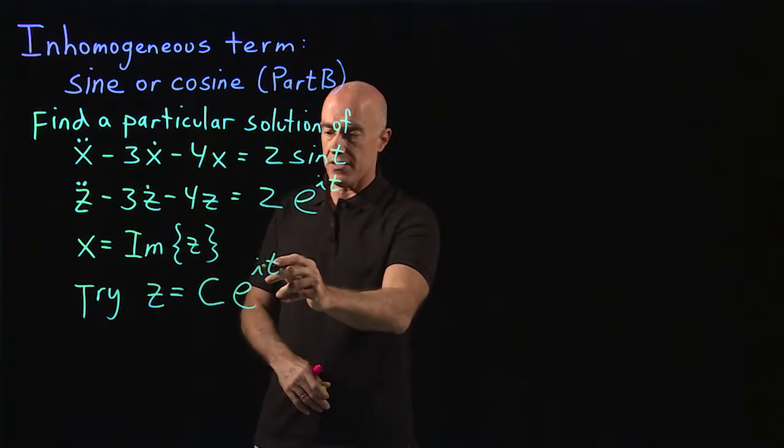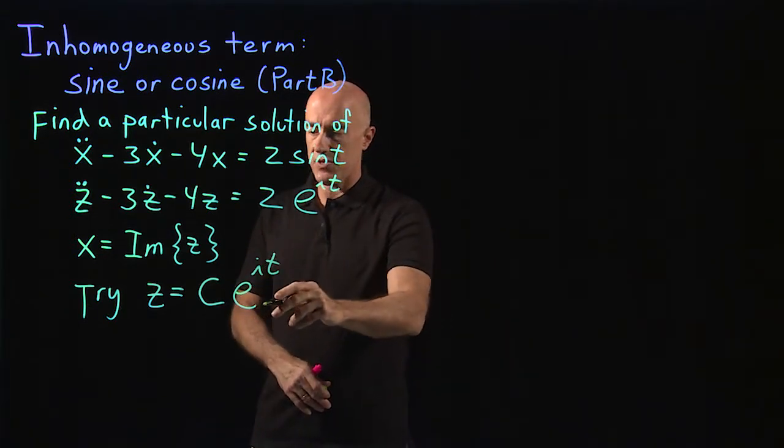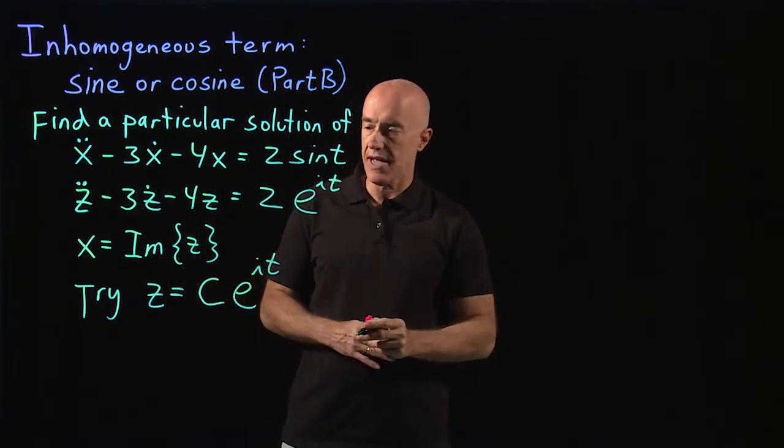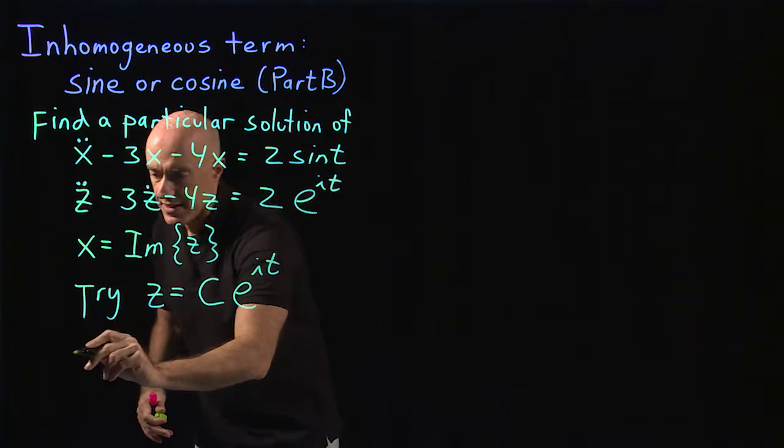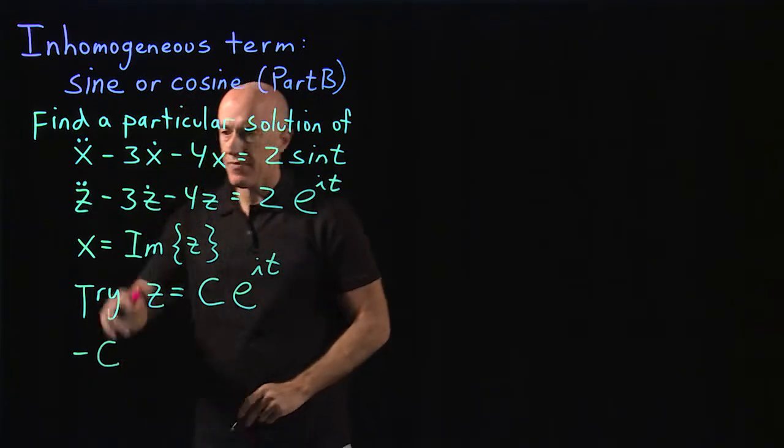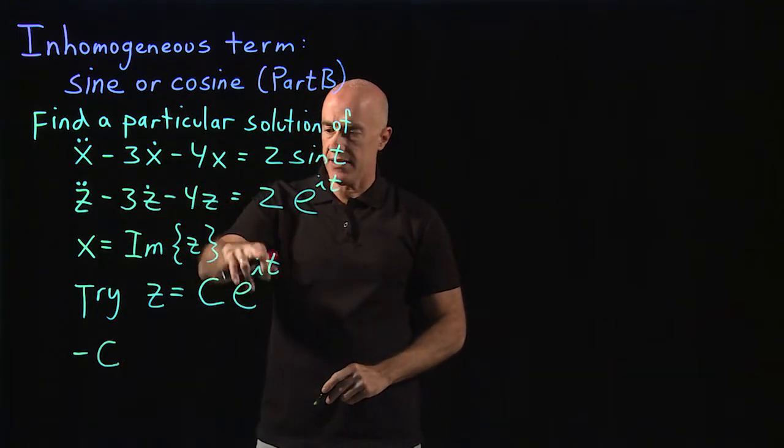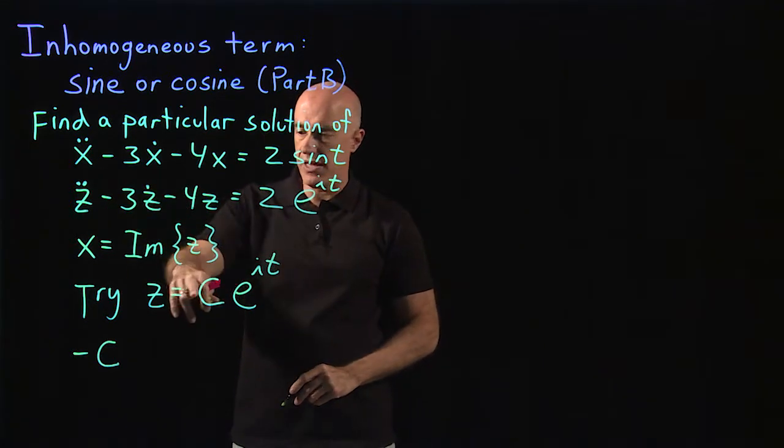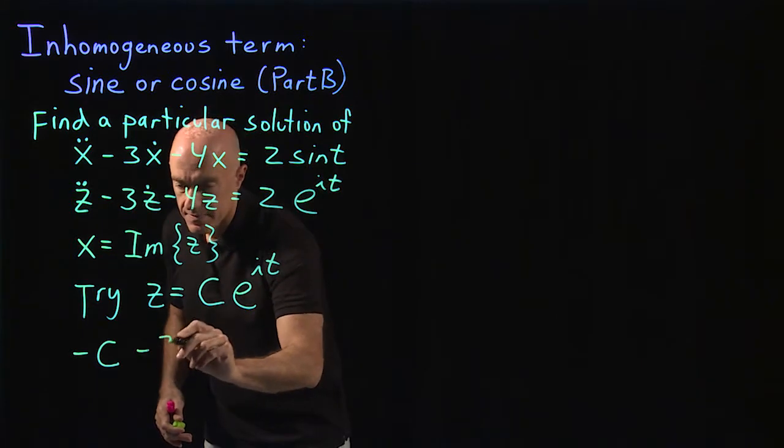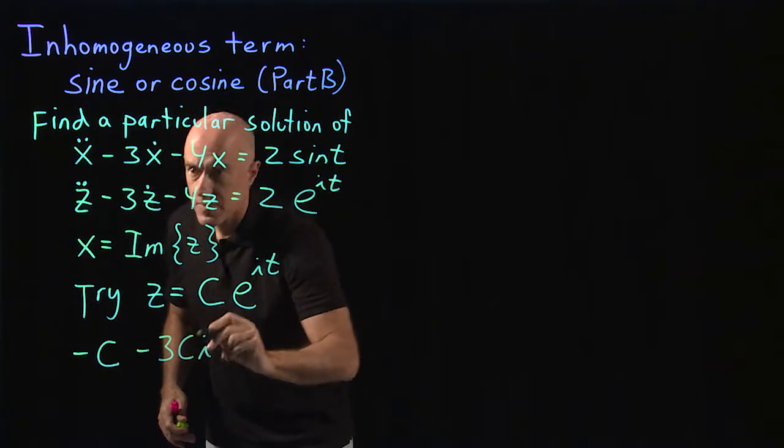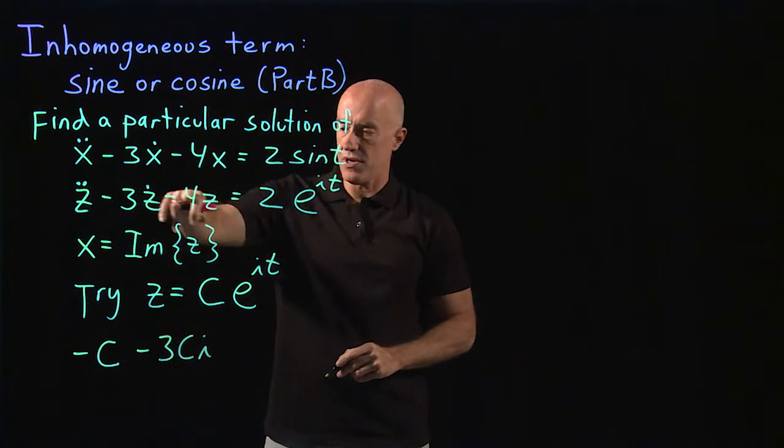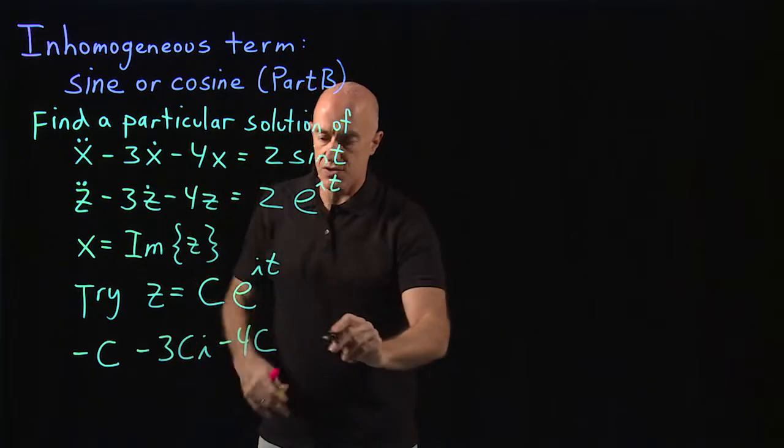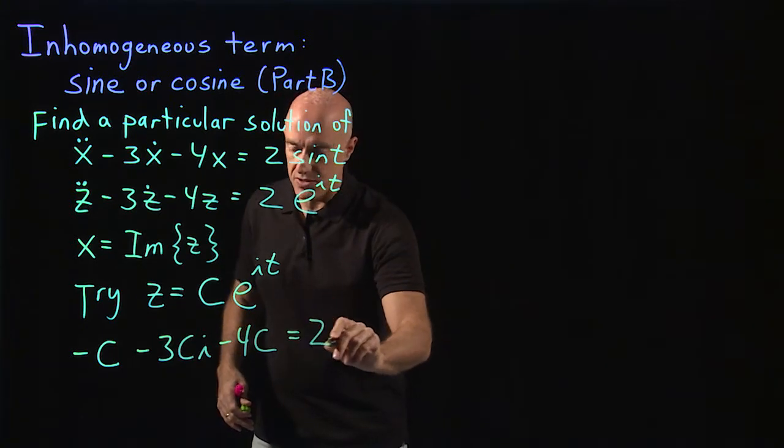Z double dot brings down i squared, which is minus 1. So if I cancel the e to the it, then I'll write minus c for z double dot, minus 3z dot. Z dot brings down an i, so minus 3ci, and then minus 4z, which will be minus 4c. And that's equal to the right hand side, which is 2.